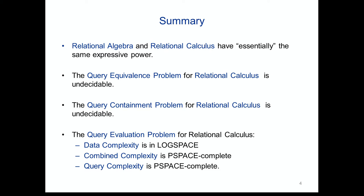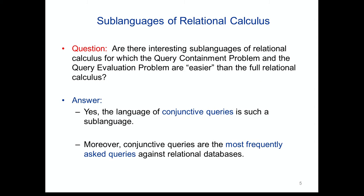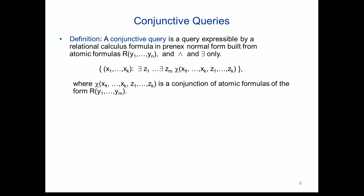The summary from last time: first, Codd's theorem that algebra and calculus have essentially the same expressive power, with the qualification that we work with the active domain. The query equivalence and containment problems are undecidable, via Trakhtenbrot's theorem. The query evaluation problem is decidable. Data complexity is in logarithmic space, and in particular in polynomial time. Combined complexity and query complexity are PSPACE-complete. This motivated the question: can we find interesting sub-languages of relational calculus for which these two problems are easier?